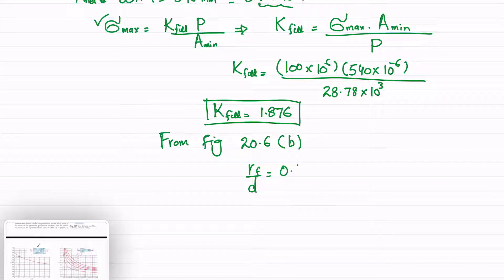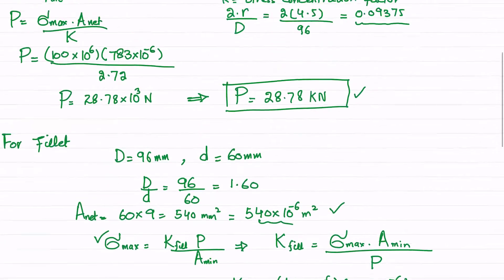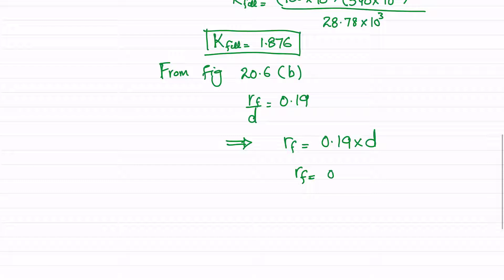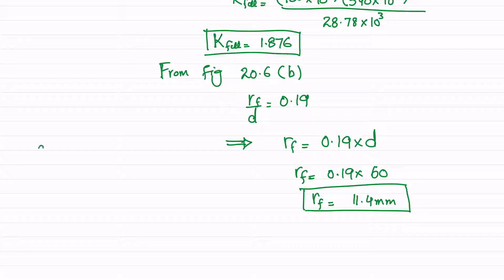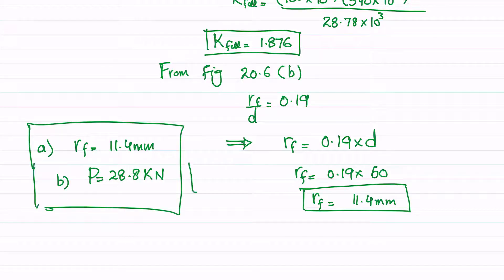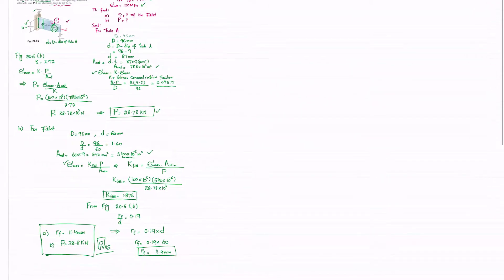With r_f over d equal to 0.19, we find rf equals 0.19 multiplied by d, where d is 60 millimeters. So rf equals 0.19 times 60, giving rf equal to 11.4 millimeters. In summary: the fillet radius rf is 11.4 millimeters and the allowable load P is 28.78 kilonewtons. Thank you for watching.